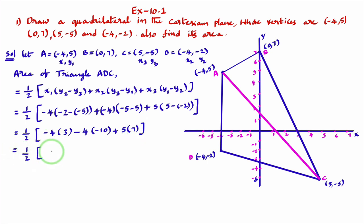1 by 2 into, minus 12, minus of minus plus, 40, plus, 5 sevenths are 35. That equal to, half into, minus 12, plus 40 is 28. 28 plus 35 is 63.